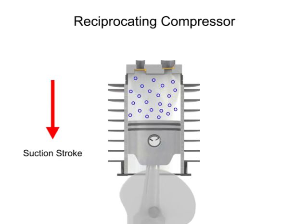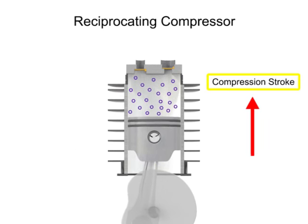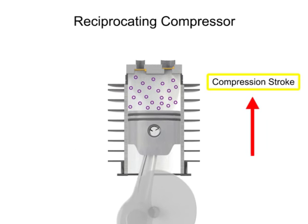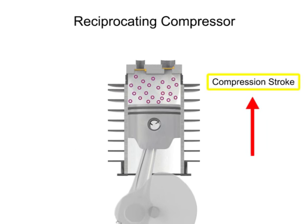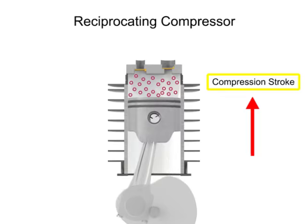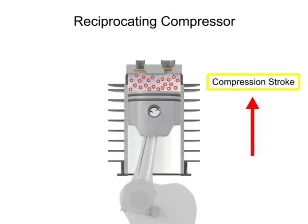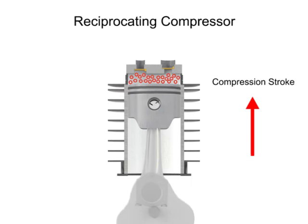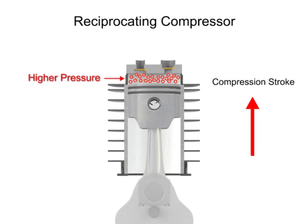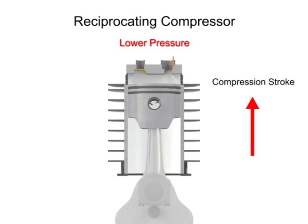As the piston begins its upward compression stroke, the volume within the cylinder decreases. The decrease in volume causes the pressure within the cylinder to increase. The increase in pressure opens the outlet valve and compressed air discharges from the cylinder.